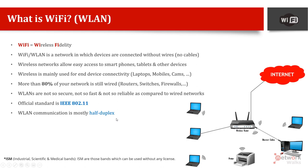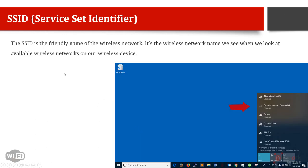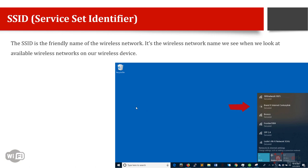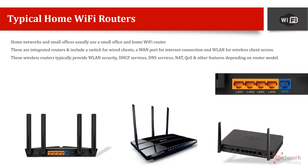SSID stands for Service Set Identifier — in simple terms, it is just the name of your Wi-Fi network. When configuring a Wi-Fi device, you assign a name to the network, and you can have more than one SSID on a single device. For example, clicking the Wi-Fi icon shows network names — one network might have the SSID 'Brand X Internet' and another 'Bronco.' SSIDs can be duplicated without causing a problem.